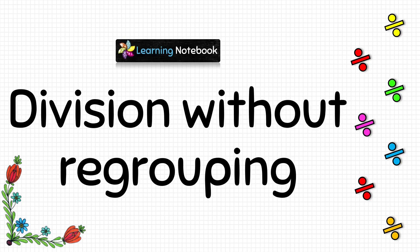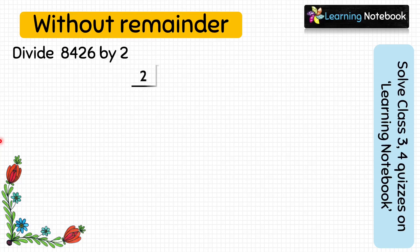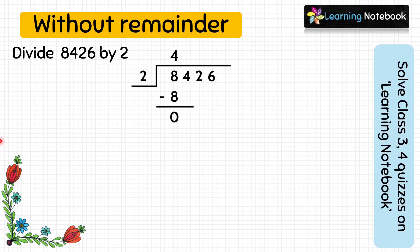First we will do division without regrouping. The question is: divide 8426 by 2. To start the long division, let's form a tent and put the dividend 8426 inside the tent and the divisor 2 outside. Now take a look at the first digit — it is 8, which is greater than the divisor 2, so we can start the long division. 2 into 4 equals 8, and 8 minus 8 equals 0.